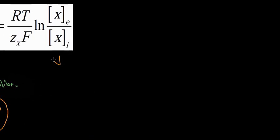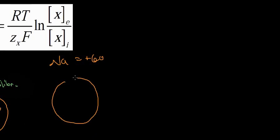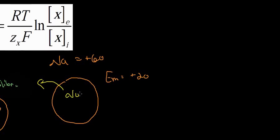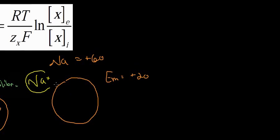Let's say that calculated by the Nernst equation I have another ion called sodium, and sodium's equilibrium potential is plus 60. Now I have a cell whose membrane potential is currently at plus 20. What is sodium going to want to do — go in or get out? Sodium is comfortable at plus 60 and the cell is only at plus 20, so sodium is going to want to make the cell more positive. Sodium is going to flow into the cell, adding positive charges and increasing the membrane potential toward plus 60.